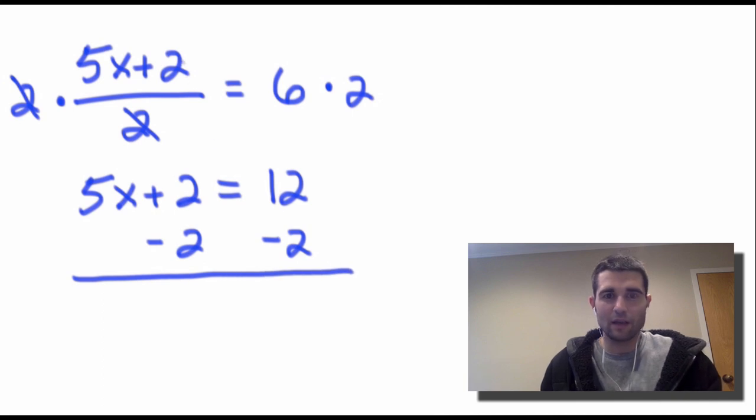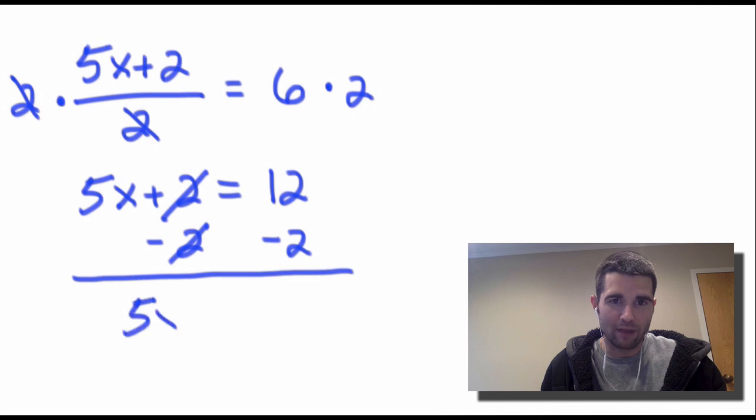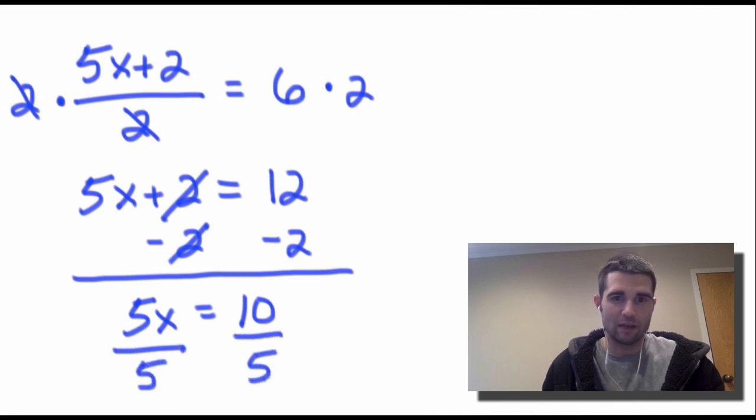As you guys can see, I'm systematically working my way down the problem, so that if I do run into any errors, I can go back and recheck. On the left here, the 2s will cancel out. We'll be left with 5x, and 12 minus 2 is 10. Our last step is simply to divide by 5 on each side, and we're going to see that x is going to come out to equal 2.